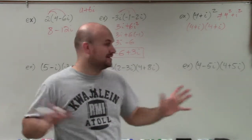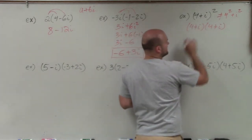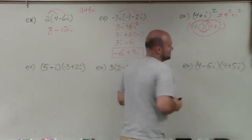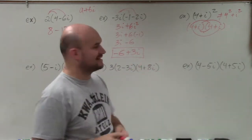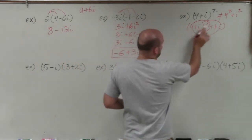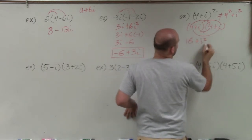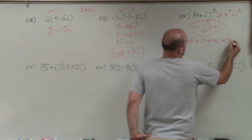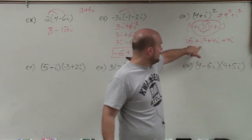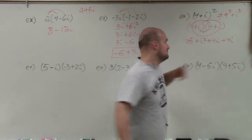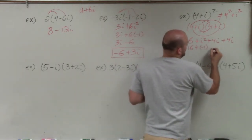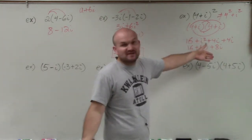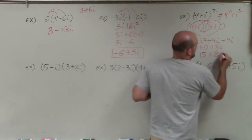You can determine whatever way you like. The first way is using the FOIL face — multiply the first terms, outer terms, inner terms, and last terms. So 4 times 4 is 16, i times i is i squared, 4 times i is 4i, and 4 times i is 4i. Rewriting i squared as negative 1, and combining 4i plus 4i gives 8i. So we have 16 plus negative 1 plus 8i, and combining the reals gives 15 plus 8i.